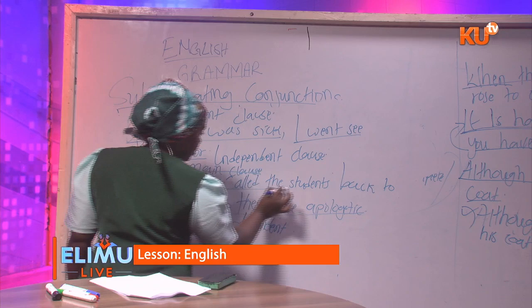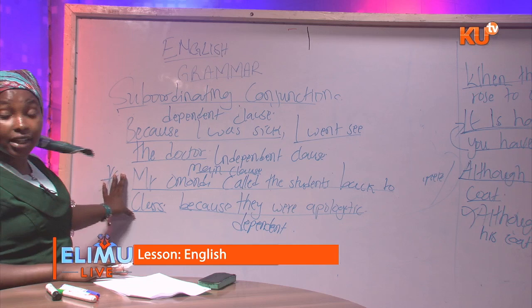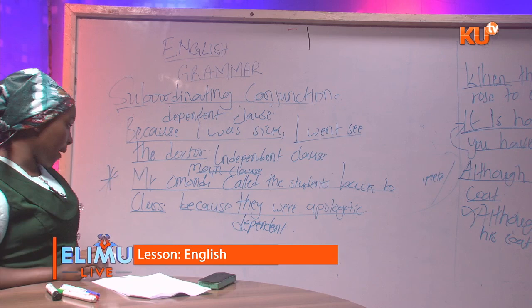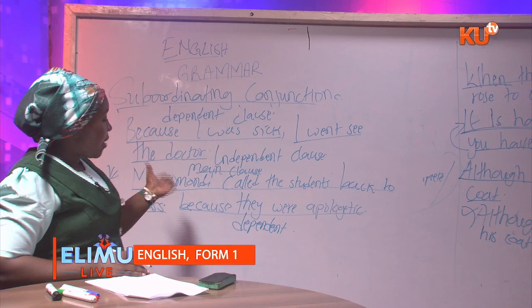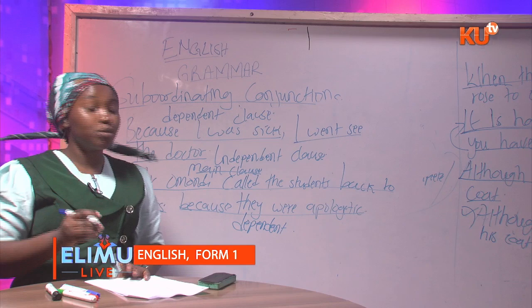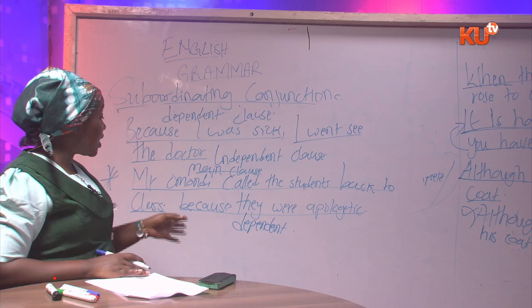We said a main clause conveys a complete thought. 'Mr. Omondi called the students back to class' — even without going any further, that sentence is communicating. But 'because they were apologetic' is hanging — you ask yourself, who are these people who are apologetic? The information is quite hanging, and that is why this clause always depends on the main clause to convey its meaning.